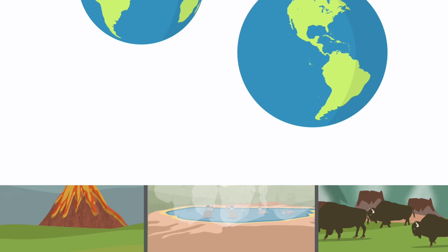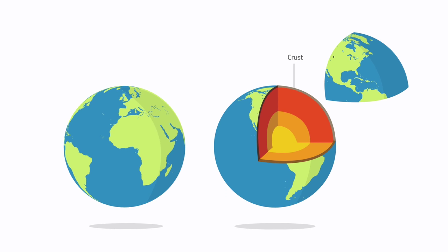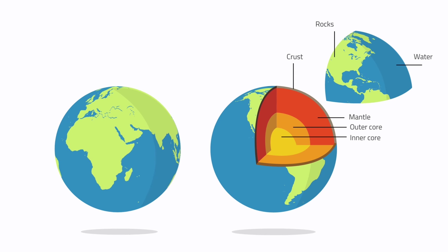The deeper you travel into the Earth, the hotter it gets. The Earth's crust is made of rocks and water. Underneath the Earth's crust is a layer of hot molten rock called magma, which is even hotter than the Sun's surface.